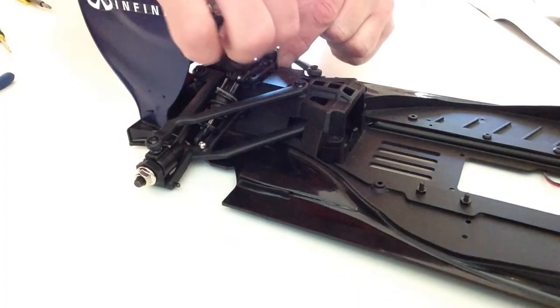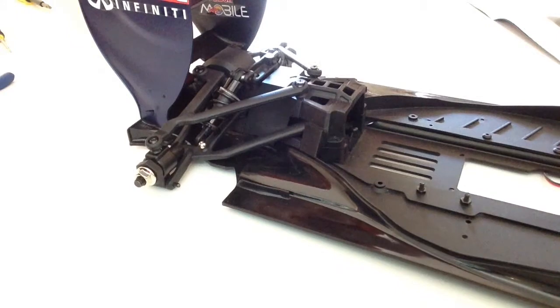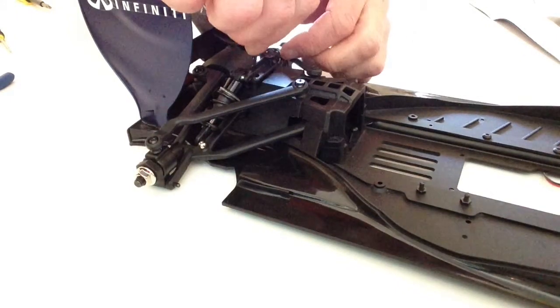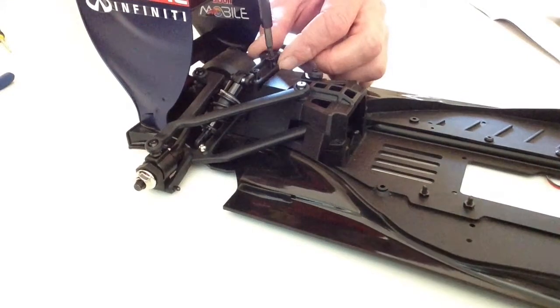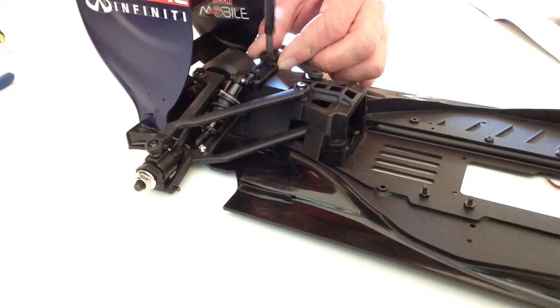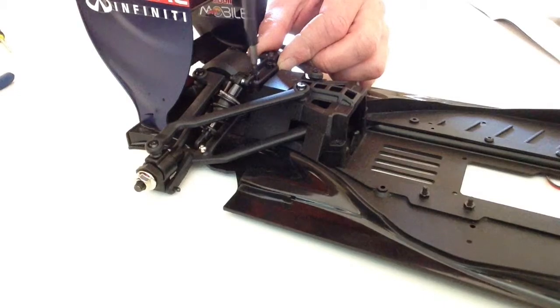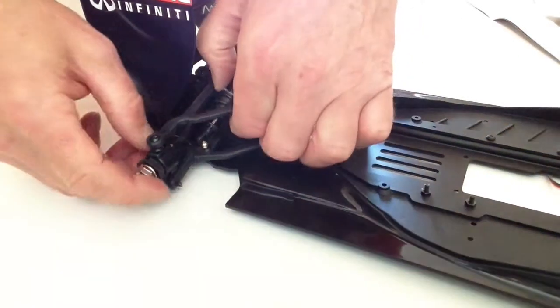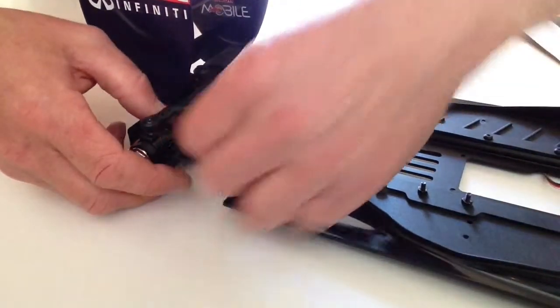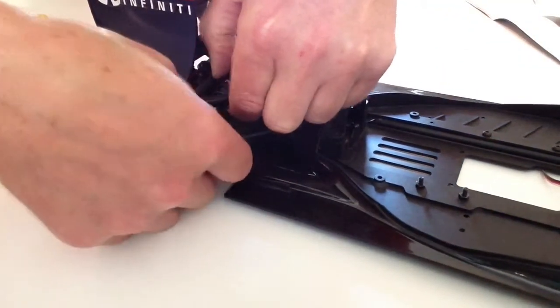Lay that into position, pop the screws in. We're just going to nip them up. We're not going to tighten them right up. And then the lower shock, we're going to place that over the ball joint.